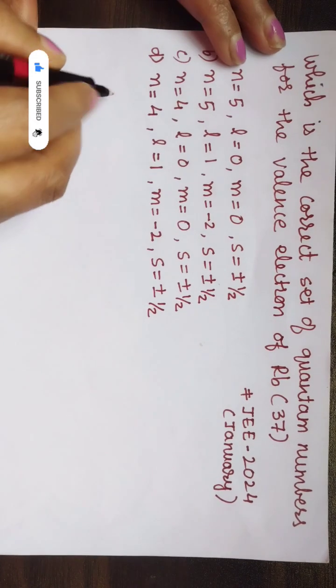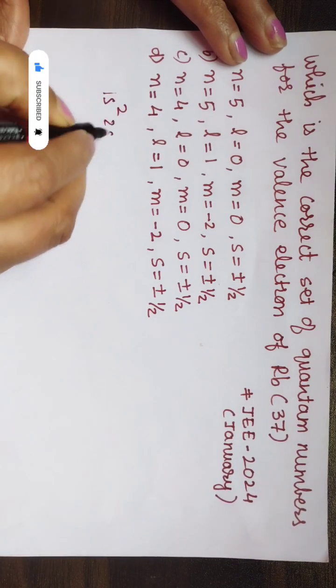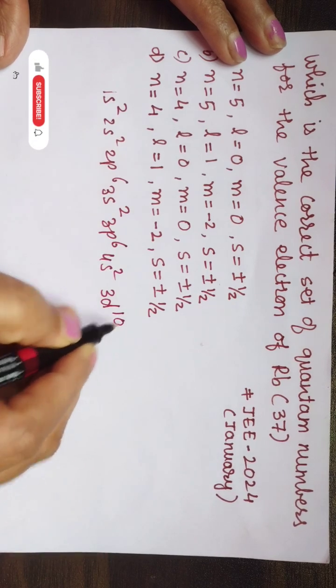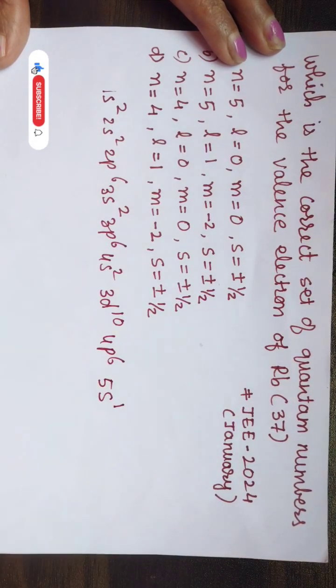Electronic configuration will be 1s² 2s² 2p⁶ 3s² 3p⁶ 4s² 3d¹⁰ 4p⁶ and 5s¹. So the valence electron is entering in 5s¹ orbital.